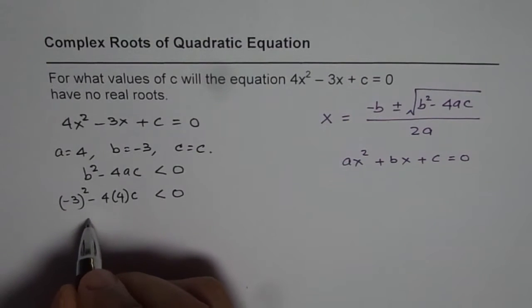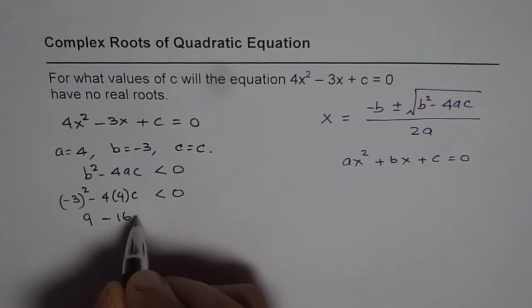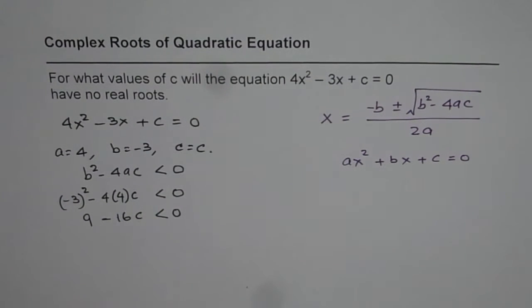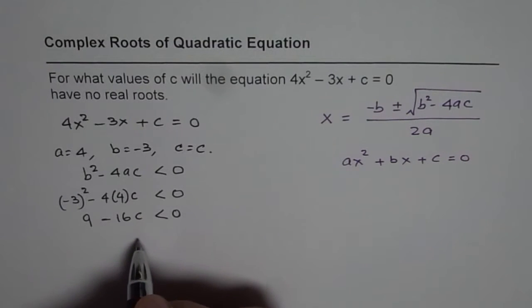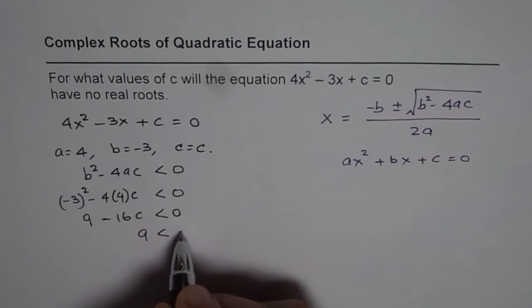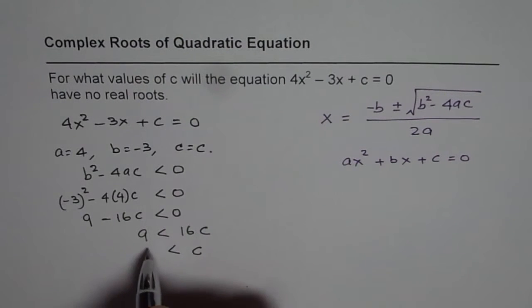(-3)² is 9, so 9 - 16c < 0. We can take 16c to the other side, so we get 9 < 16c, or c > 9/16.